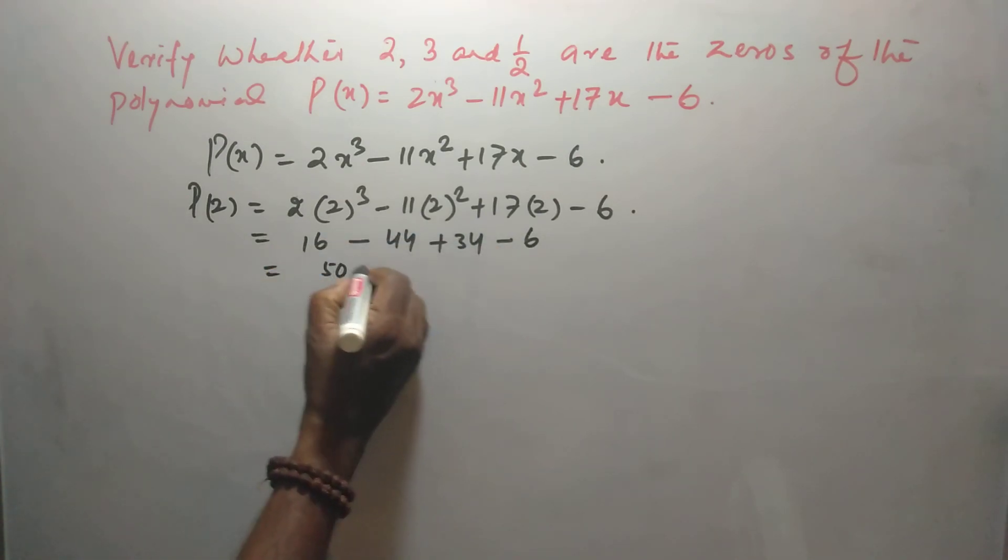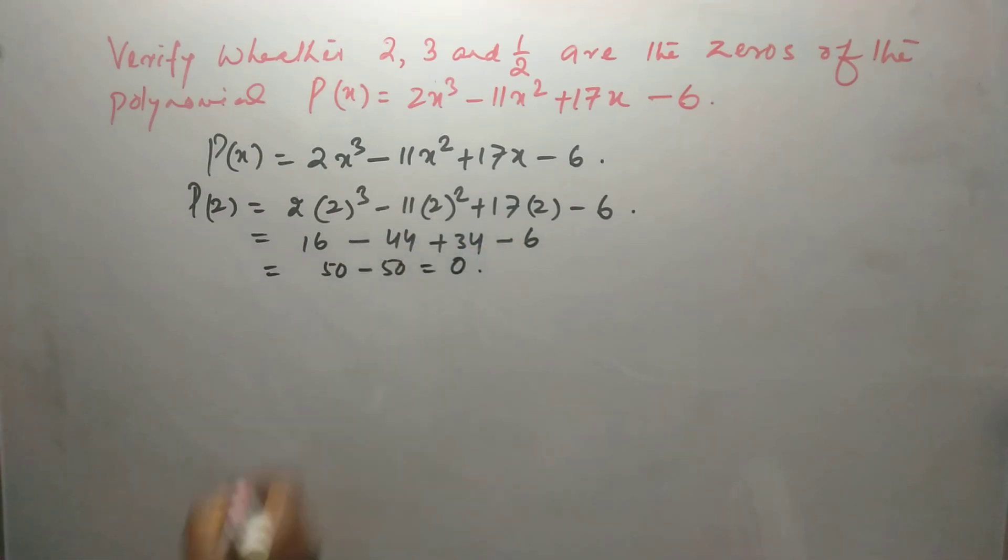50 minus 44 minus 6, 50. Yes, it is 0. Then, P(3).